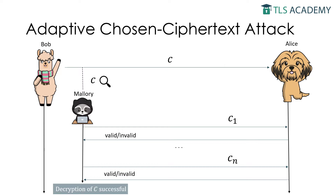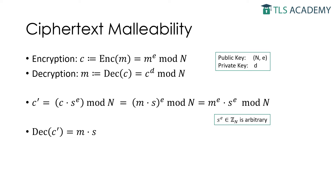To modify the original ciphertext and gain knowledge about the plaintext, Mallory exploits ciphertext malleability. An encryption scheme is called malleable if a given ciphertext C can be transformed into another ciphertext C', which can be decrypted to the message M', where M' is the decrypted message for the ciphertext C'. This might eventually lead to some information about the plaintext of the original ciphertext C.